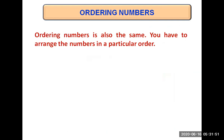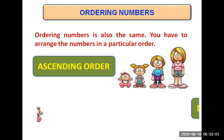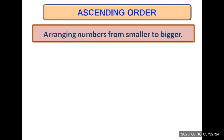Numbers can be arranged in the same way. You have to put the numbers in a particular order that can be ascending order or descending order. Ascending order means you will put the smallest number at the first place and then stepwise go to the biggest number, whereas descending order means you'll put the biggest number at first place and stepwise go to the smallest number.